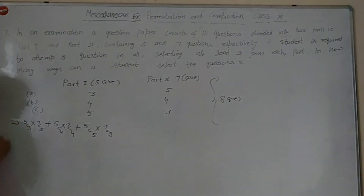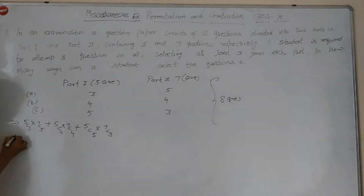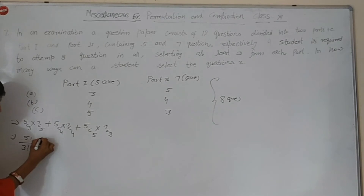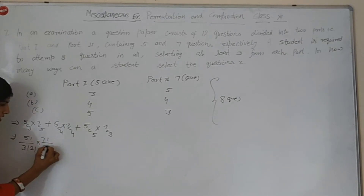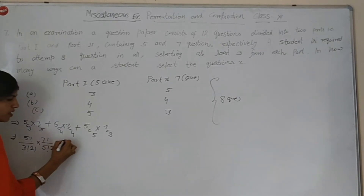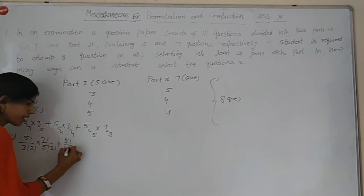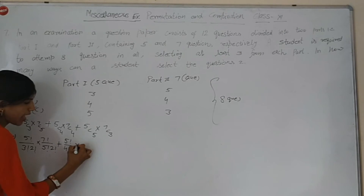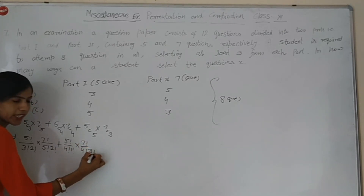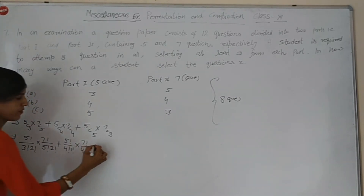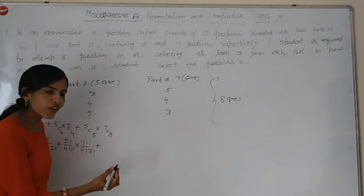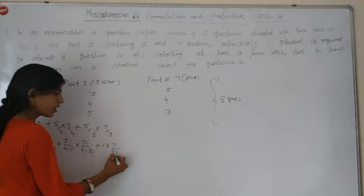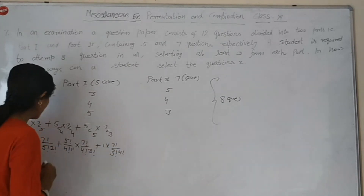Isko hum kya likhenge? 5C3 × 7C5, plus 5C4 × 7C4, plus 5C5 × 7C3. Formula notation: 5!/(3! × 2!) × 7!/(5! × 2!), plus 5!/(4! × 1!) × 7!/(4! × 3!), plus 5C5 × 7!/(3! × 4!).